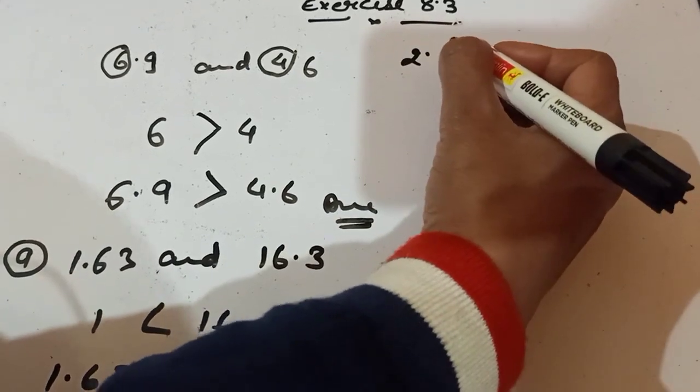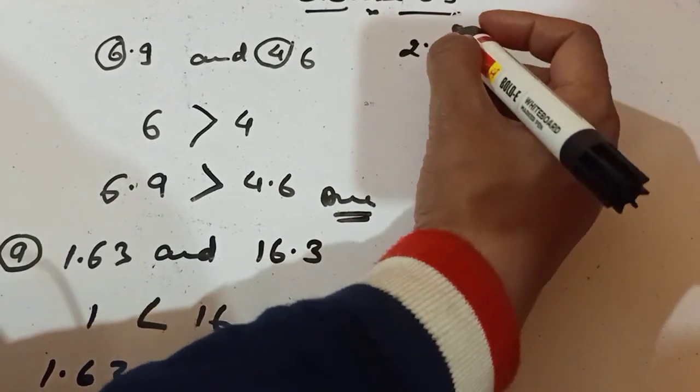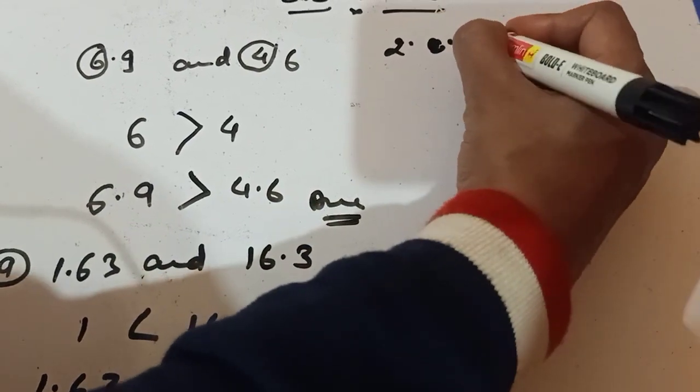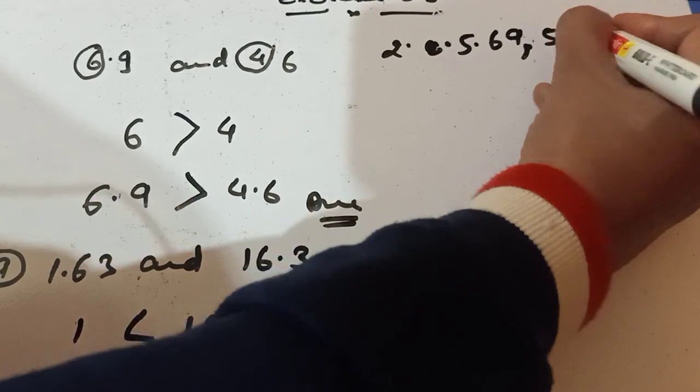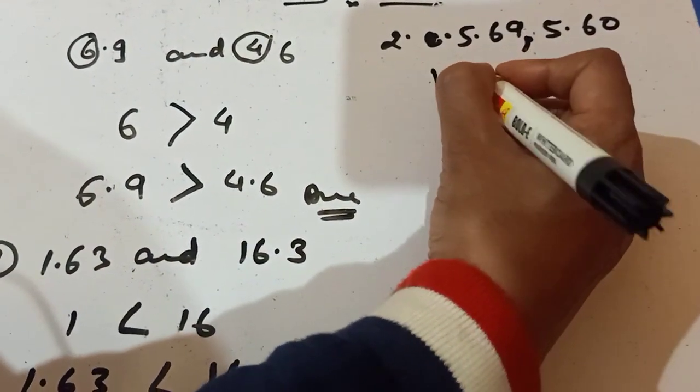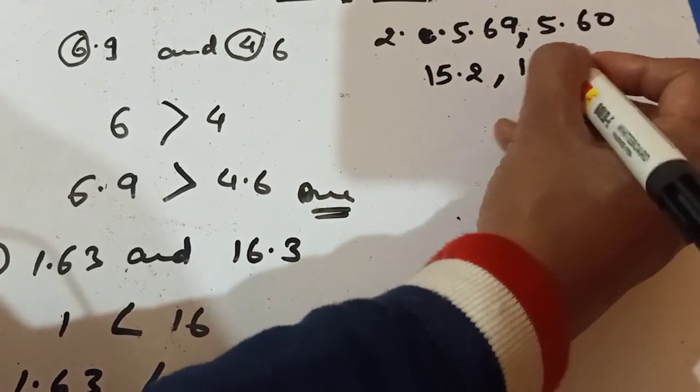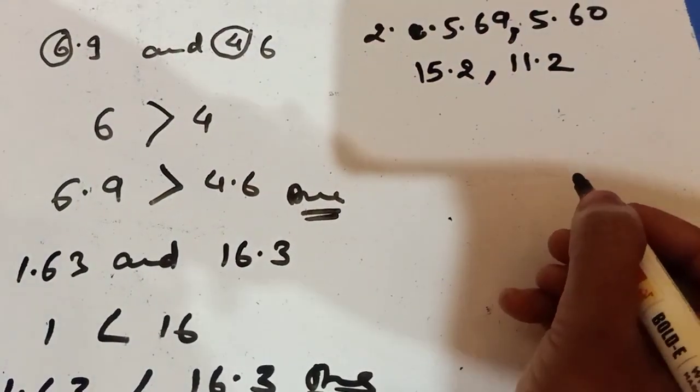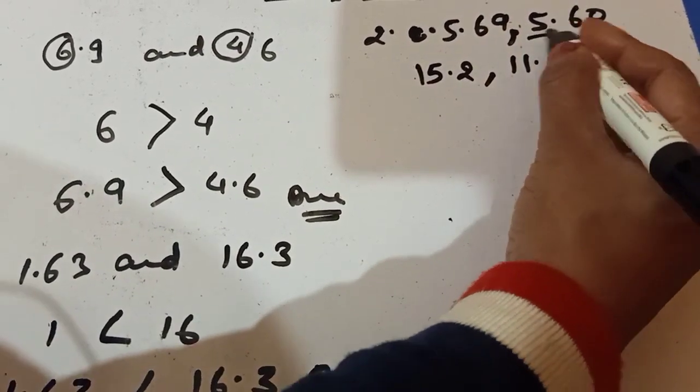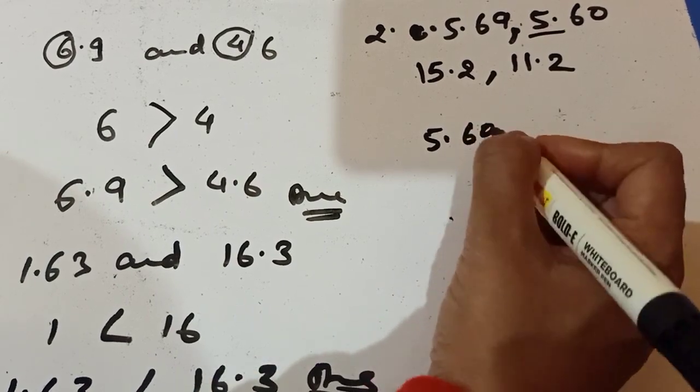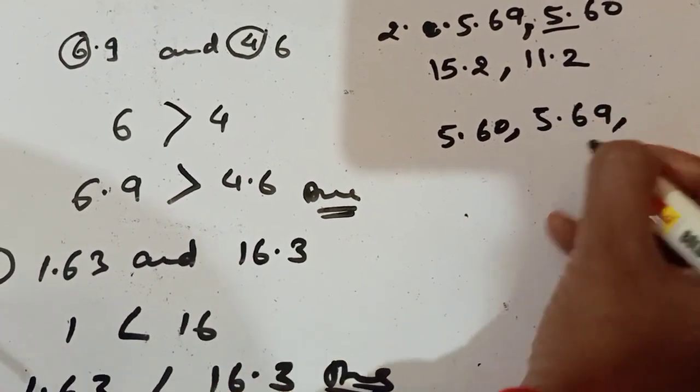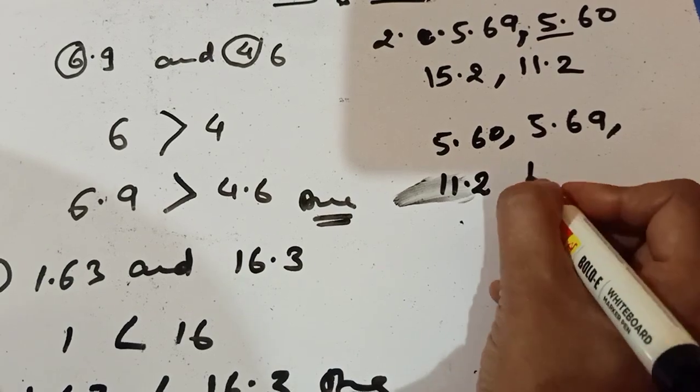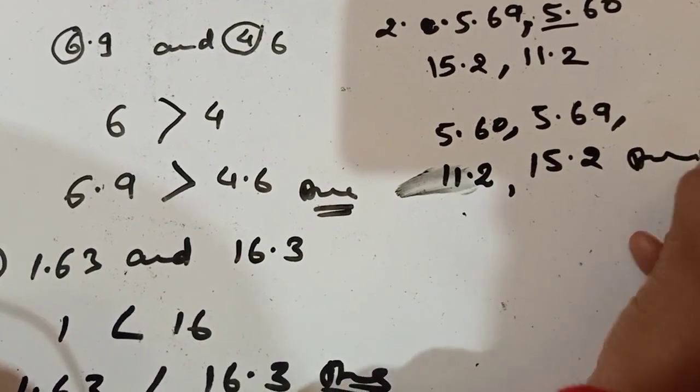Question number 2. Arrange the following decimal in ascending order. So from question number 2 I am taking question number C: 5.69, 5.60, 15.2, 11.2. Ascending means first we know that ascending means smaller to bigger. So among this group you see which one is smaller? 5.60 is smaller. After that 5.69. After that 11.2 and after that 15.2, and it is the answer of this question.